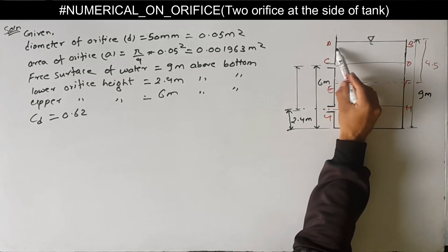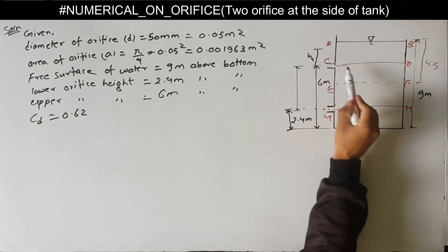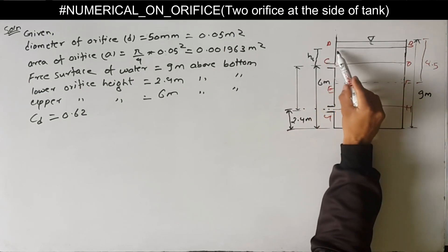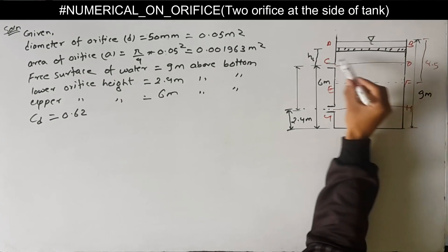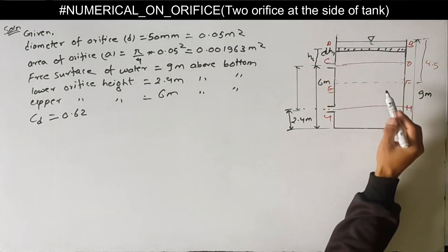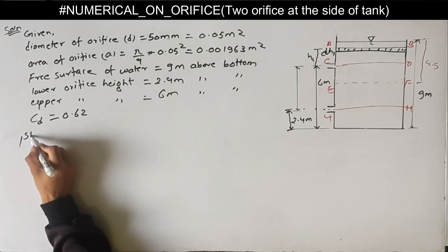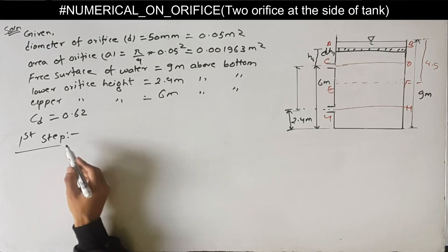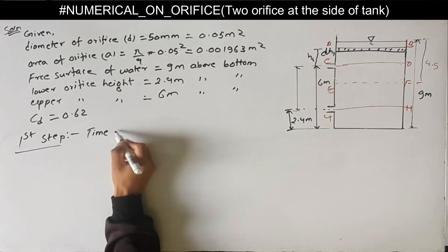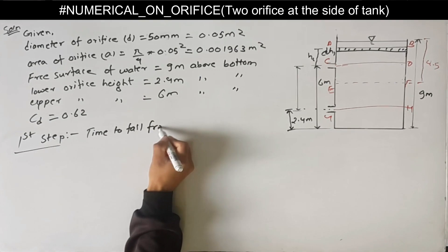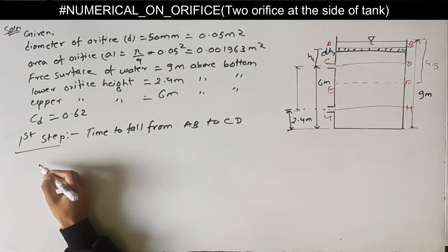First of all, we calculate step one: reducing the level of water from A,B to C,D. Let at any instant the water level is at height H1 above C,D. In a small interval of time dt1, the water level falls by a small height dH1. We consider height H1 at any instant of time above the upper orifice.